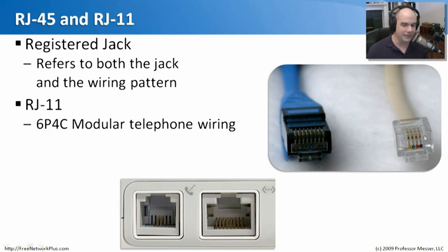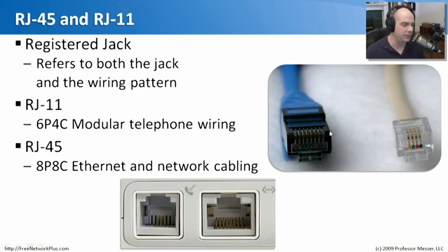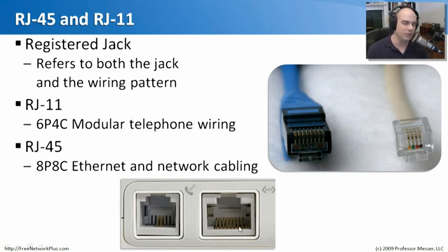RJ11 is the smaller connector. It's called a 6P4C — six possible positions but only four conductors are used. Those four conductors are used for modular telephone wiring, so your phones use an RJ11 connector. The RJ45 is different: it has an eight-position, eight-conductor Ethernet connection with all eight positions in use. You'll see RJ45 extensively — it's a bit wider than RJ11. If a device has both a modem and a network port, be careful not to plug your telephone cable into the Ethernet port by mistake.